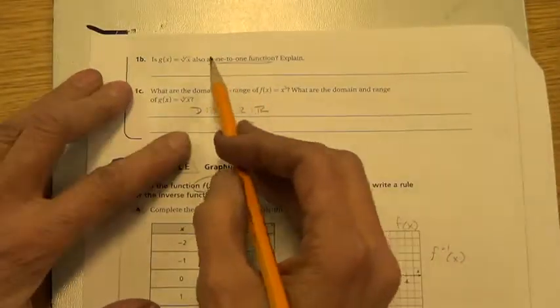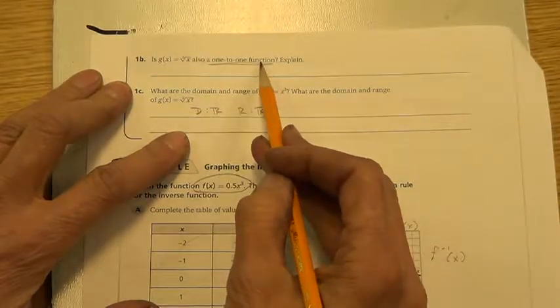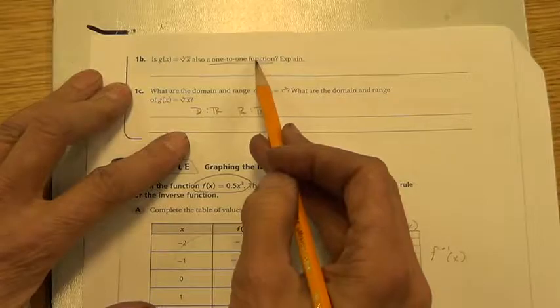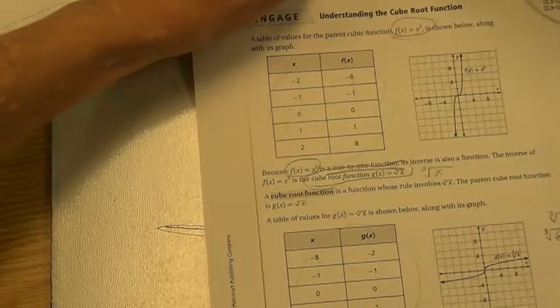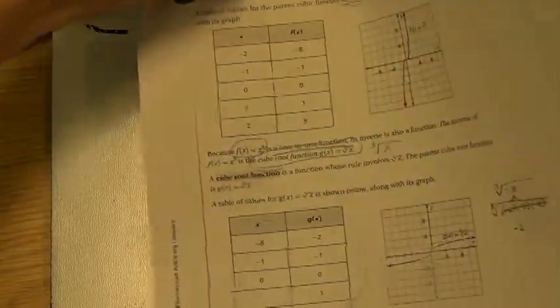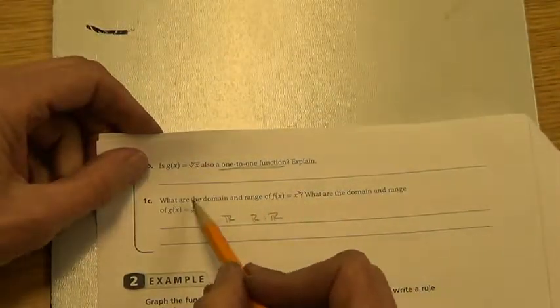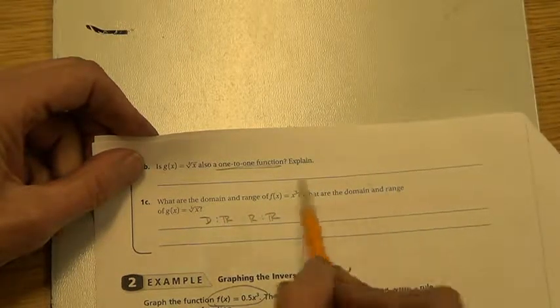Now, right here it says, is g of x, cube root of x, also a 1-to-1 function? And you could look at the points and verify that it's a 1-to-1 function, that the x and the y don't cheat, or you can use the graph and the vertical line test to verify that it's a function. You would have to cite one of those reasonings when you explain it.